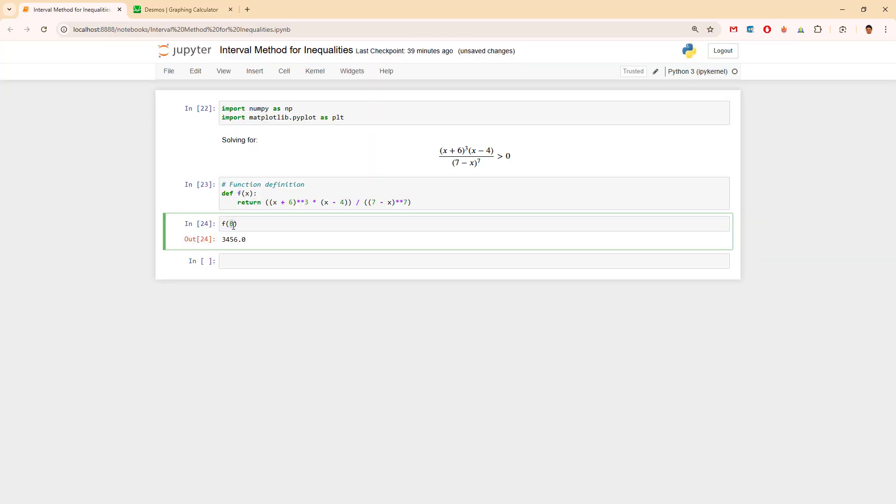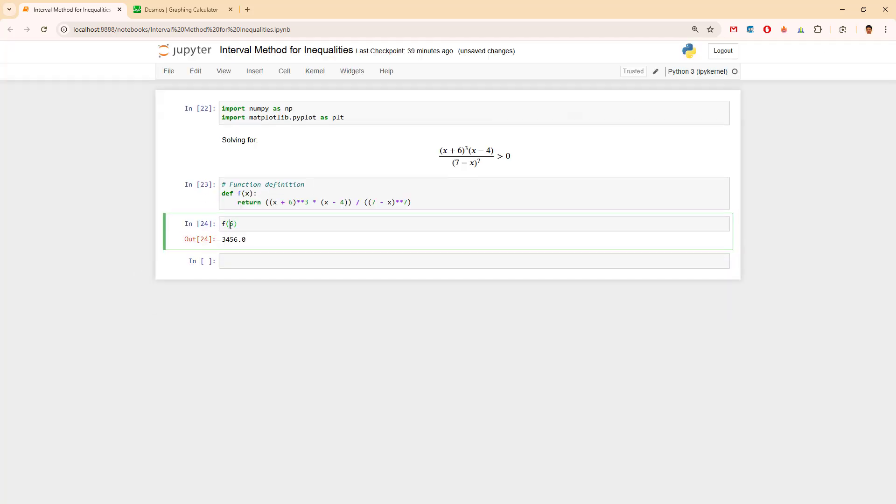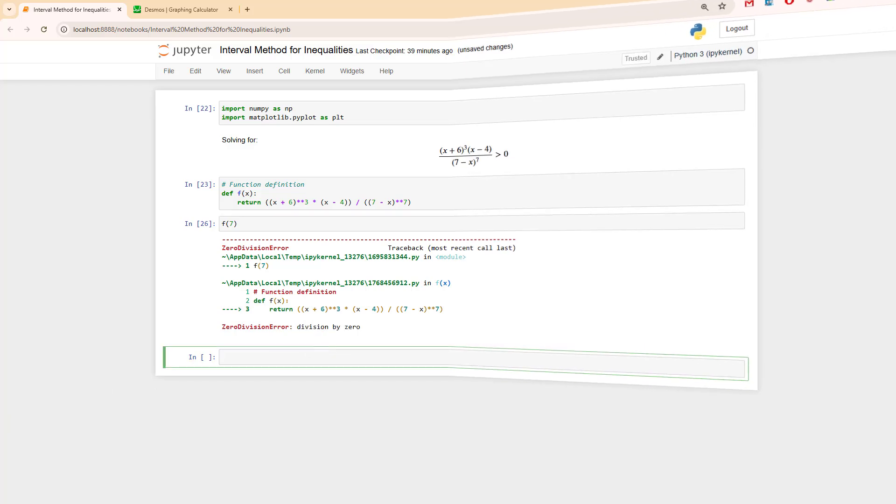What about f of minus 6? f of minus 6 is a 0. So in our case it's not a solution. And what will happen if we write f of 7? I'm expecting an error. Yes, a division by 0 error, which is actually great.